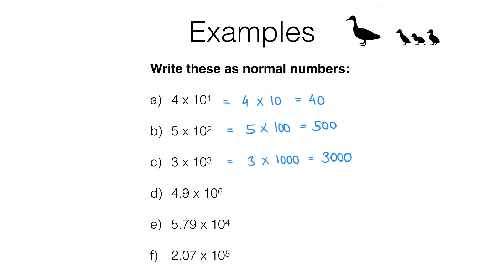Now in D, we have 4.9 multiplied by 10 to the power of 6. 10 to the power of 6 is actually 1,000,000. But multiplying by a million is still fairly straightforward. We just have to make sure we move these digits enough place value columns along. Also, a good idea is just to estimate how big an answer you're expecting. This is just about 5 lots of 1,000,000, so we want our answer to be about 5,000,000. And in fact, the answer is going to be 4,900,000.